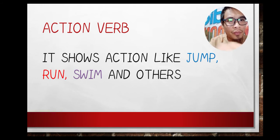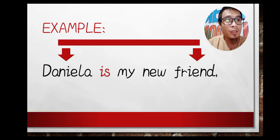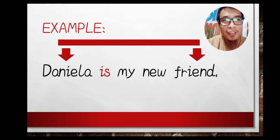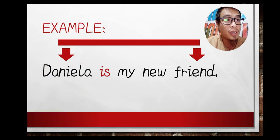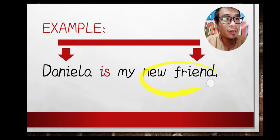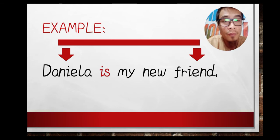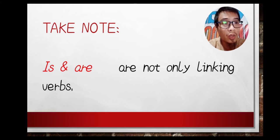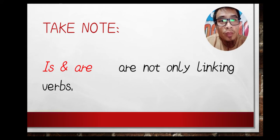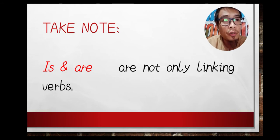An example for linking verb: 'Daniela is my new friend.' Here, 'is' is our linking verb. It connects our subject, Daniela, to additional information — who is Daniela? Daniela is the new friend. That is the basic function of the linking verb.